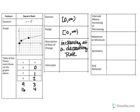So that's why it's a decreasing rate. The intercepts here are the x, 0, 0, and the y is also 0, 0. The intervals where it's increasing and decreasing – this one does not decrease, so there are none of those. It increases over the full domain, so from 0 to infinity.